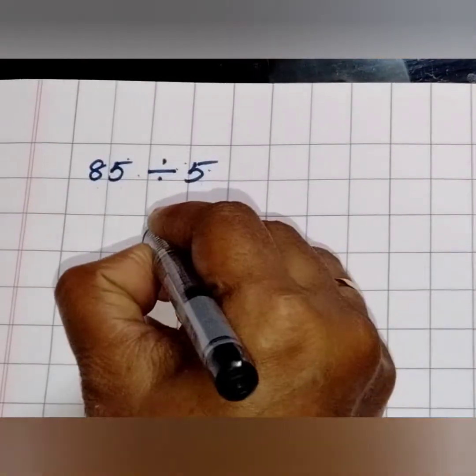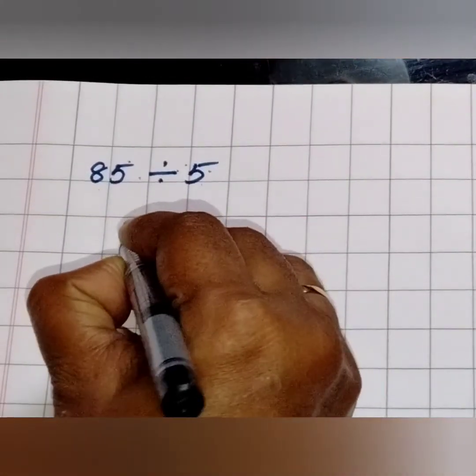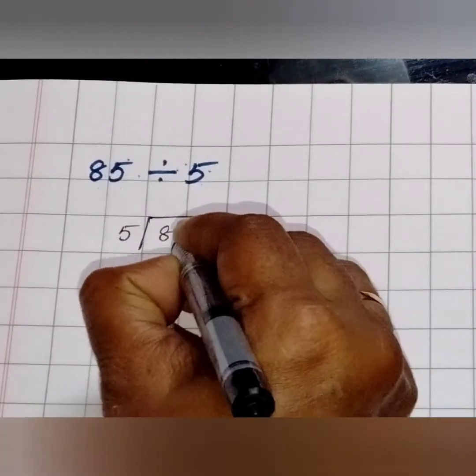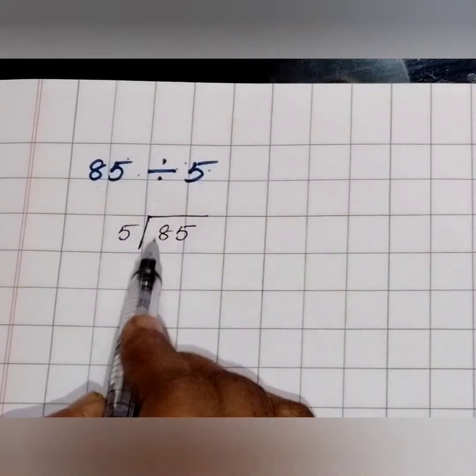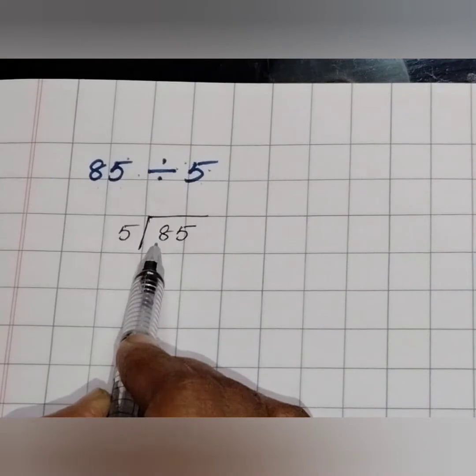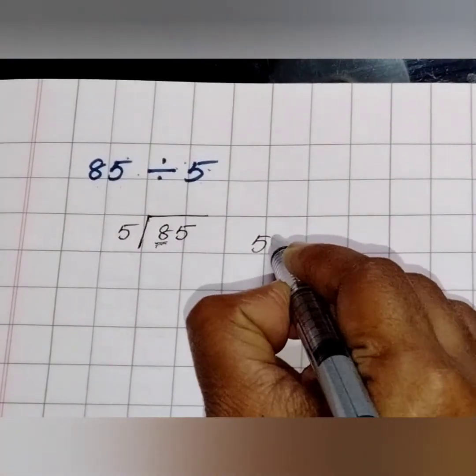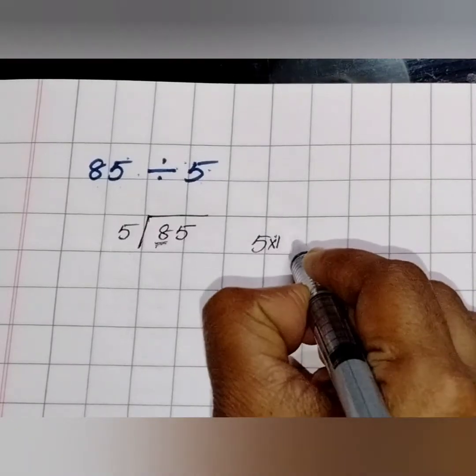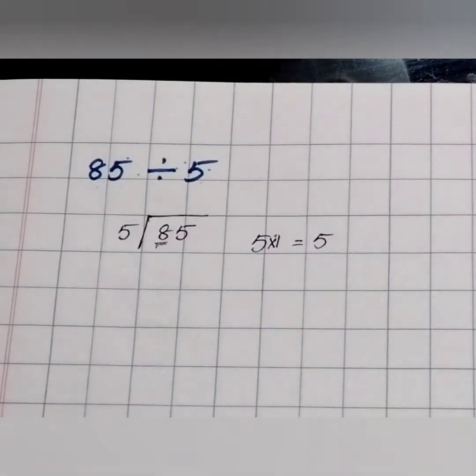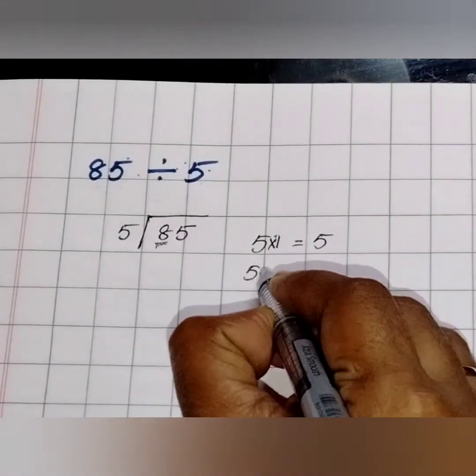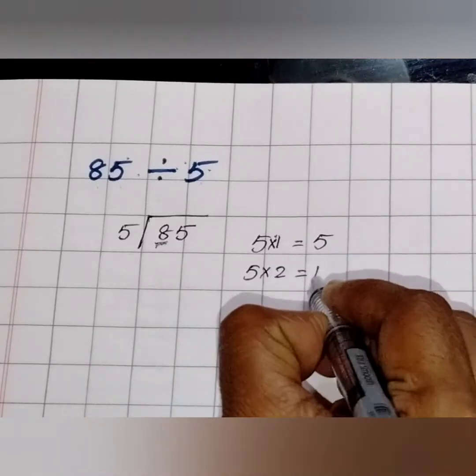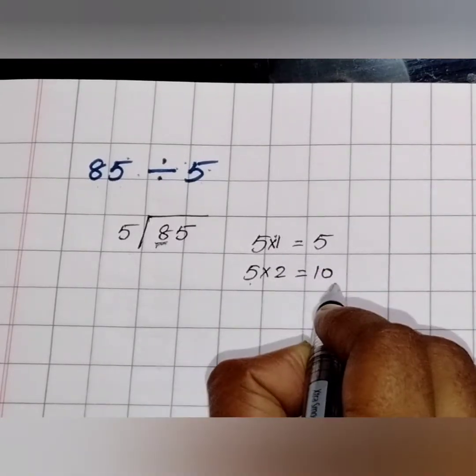Our first question is 85 divided by 5. Here I have written 85 inside the division bar and 5 outside the division bar. Let us write the 5's table to check when 8 comes in 5's table. 8 is not there because 5 twos are 10.